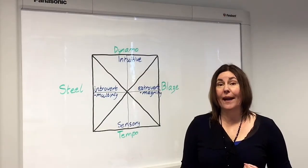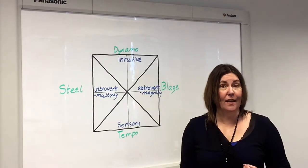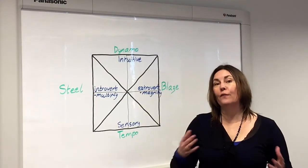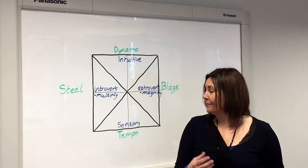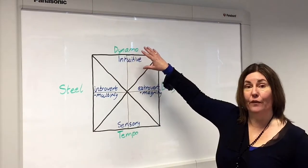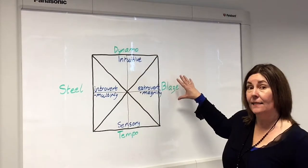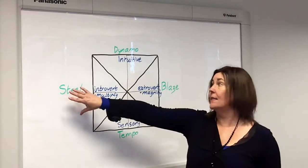So let's have a look at where the creator sits on the Talent Dynamics Square and just remind you of some of the frequencies as well. So you can see there we've got the four frequencies: the dynamo, the blaze, the tempo and the steel.